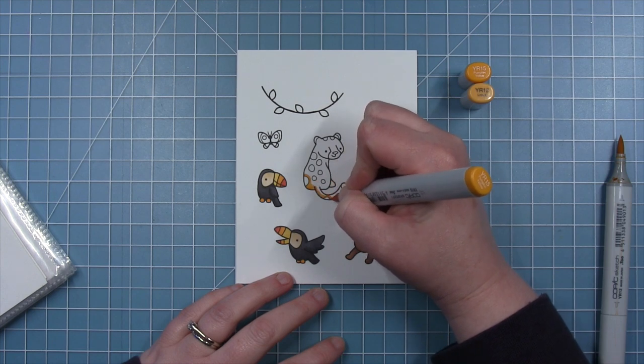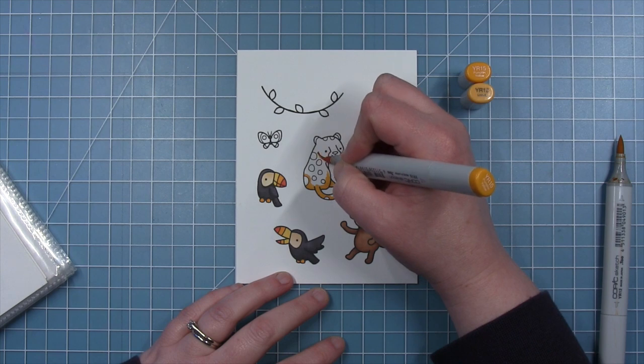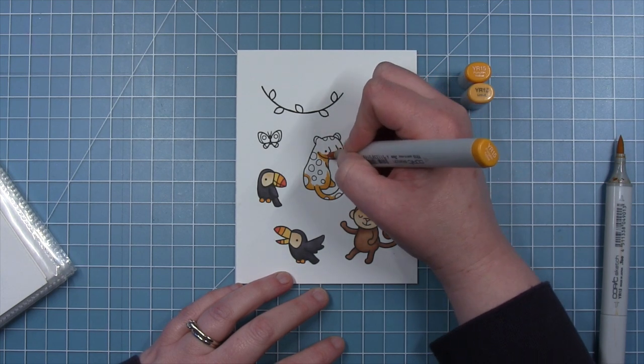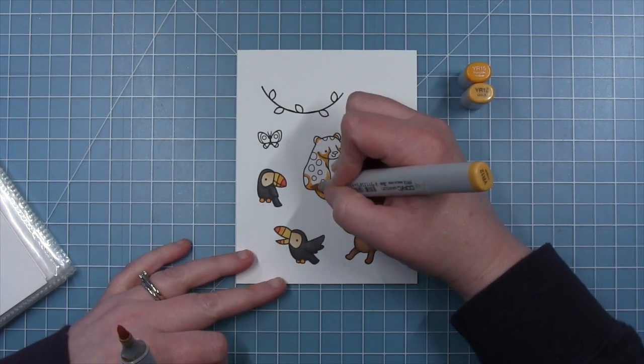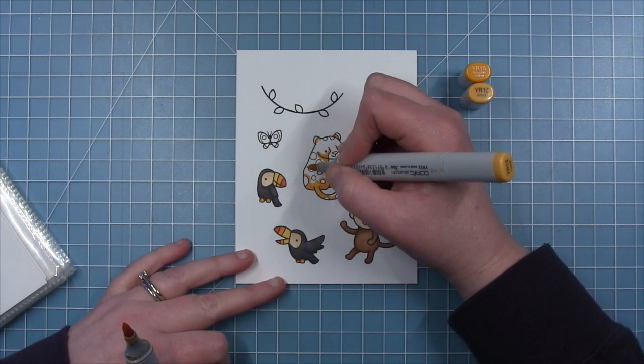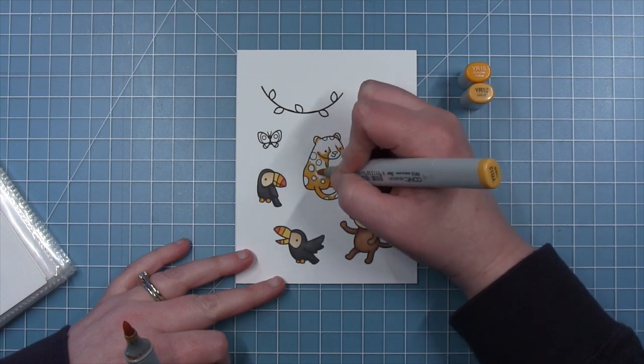And then now I'm moving on to my little jaguar. I have two colors of yellow here. A YR15 is the dark color I'm using right now for the shadows. And then I'm going to go all over with that YR12, which is a lighter orangey-yellow color.